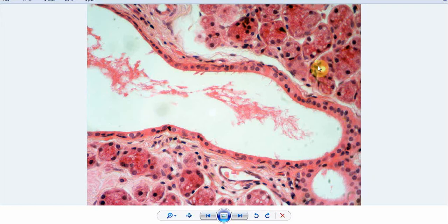The intercalated duct comprises cuboidal cells and they connect the various serous acini. You can see the diameter of the duct over here. Compared to the intercalated duct, you can see a duct over here.